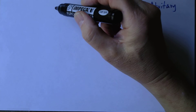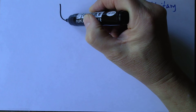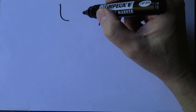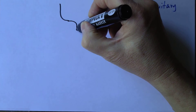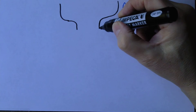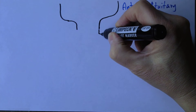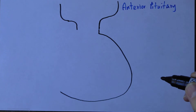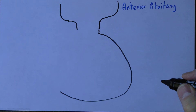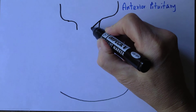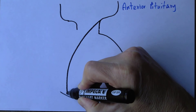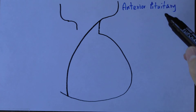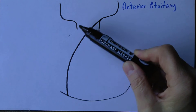The pituitary gland is associated with the hypothalamus in the brain and sits on a stalk, sometimes called the infundibulum. Here we have the large anterior lobe of the pituitary gland — the anterior lobe is the larger of the two lobes. I'm not going to draw the posterior lobe on this diagram because we're focusing on the anterior, but it would be here towards the back.